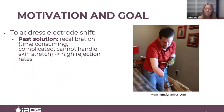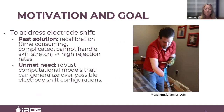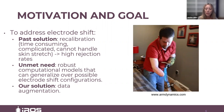In practice so far, electrode shift has been addressed with recalibration. However, this is a complicated process with limited performance, often increasing user rejection rates of prosthetic systems. Therefore, there is an unmet need for robust computational models that minimize the need for recalibration and can generalize the performance over possible electrode shift configurations. Addressing this unmet need is the focus of this paper.